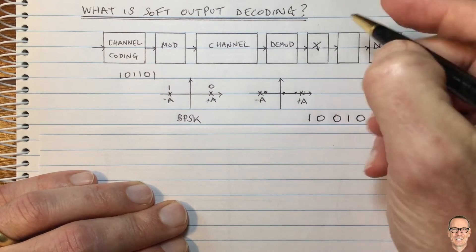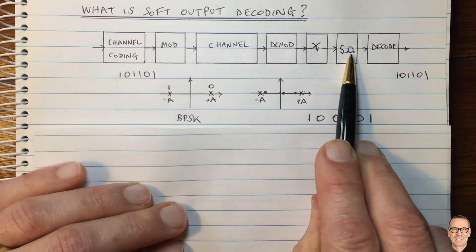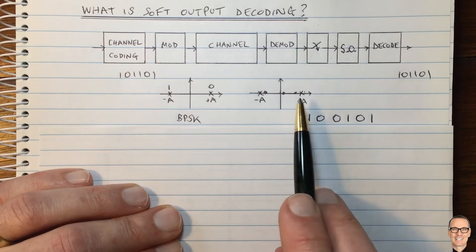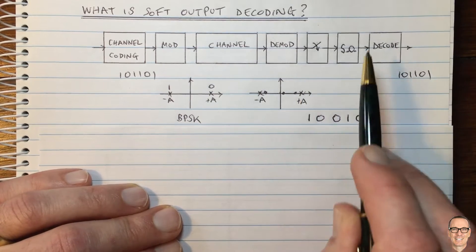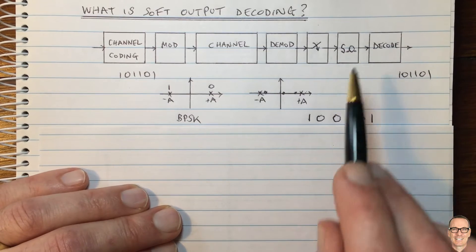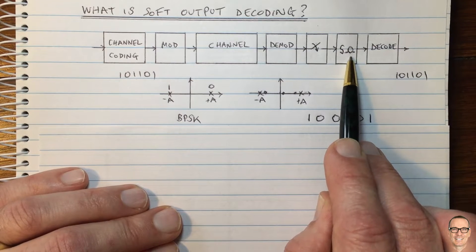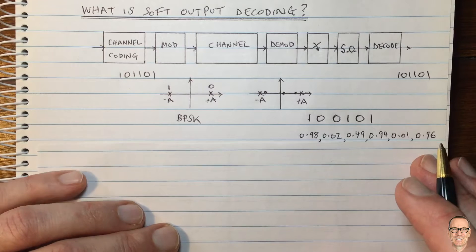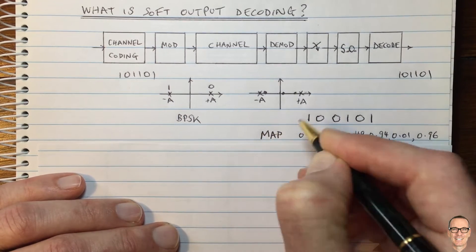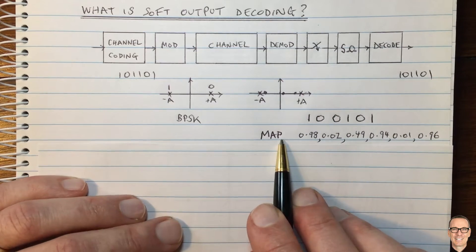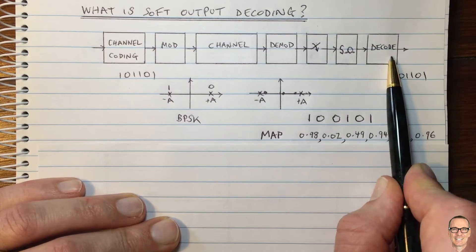So this box I've left empty — let me now call this the soft output calculation. Soft output calculation happens here: instead of making a hard decision of choosing this to be plus A, let's think about what soft decisions we could make. Something we could do here is a maximum a posteriori (MAP) calculation — and for details on that look in the description below. We calculate the MAP probability that A=1 was sent, and that's what we pass to our decoder.